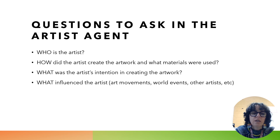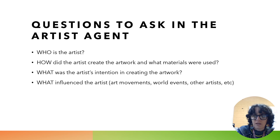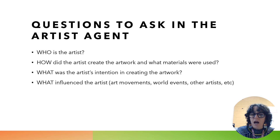Questions to ask in the artist agent include: Who is the artist and what do we know about them — their age, gender, sexuality, race, ethnicity? Where do they live in the world and what time do they live in? How did the artist create the work and what materials did they use — were they using traditional techniques, creating new techniques, challenging or subverting art practices? What was the artist's intention — were they intending to represent something in a new way, to document, to shock an audience, to offer commentary? And what influenced that artist — art movements, world events, other artists, personal experiences?